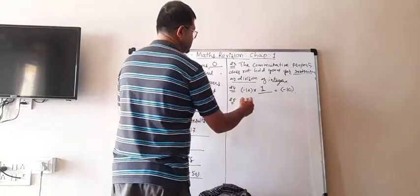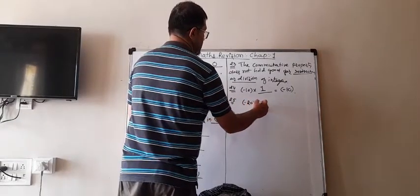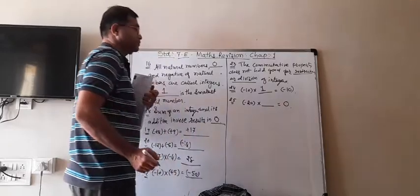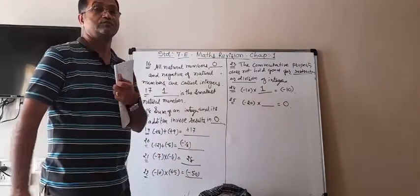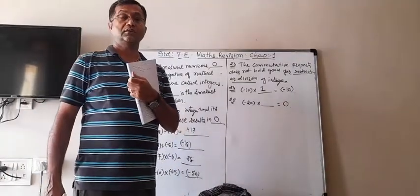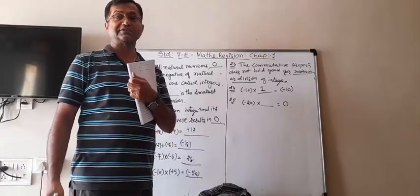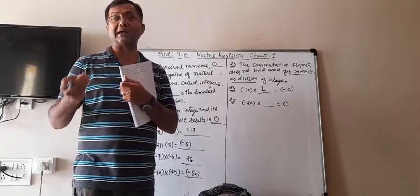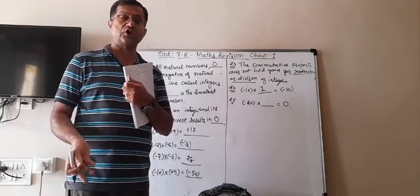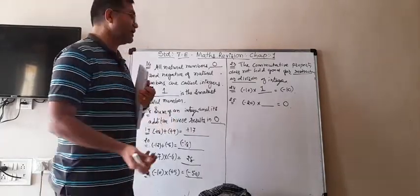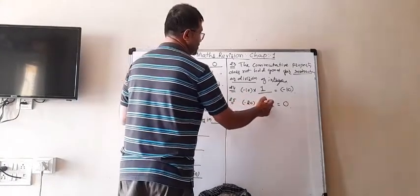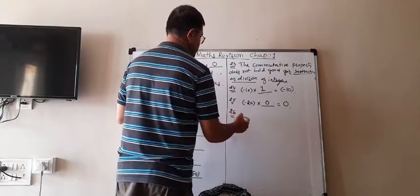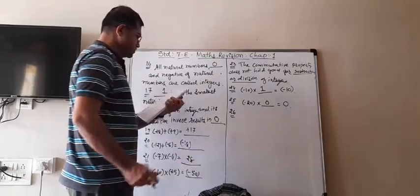Blank 25: (-20) × blank = 0. Multiplication can be zero only when we multiply any number by 0. So (-20) × 0 = 0.